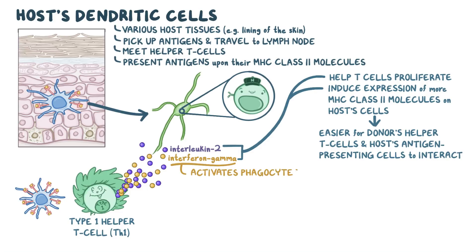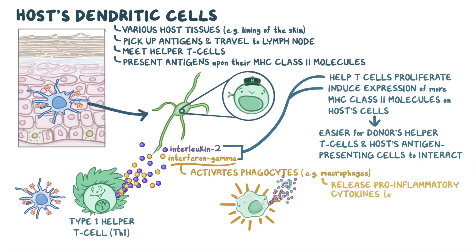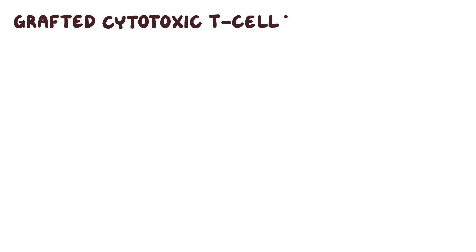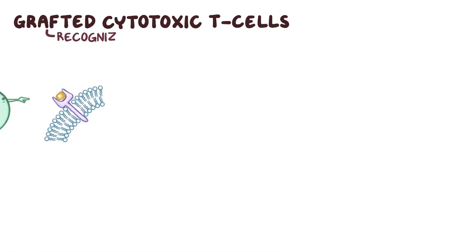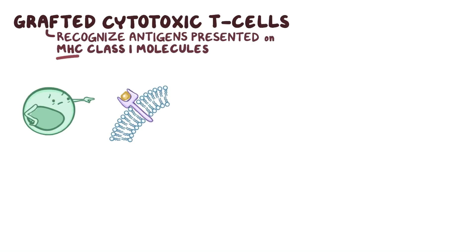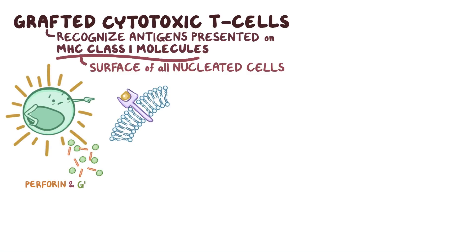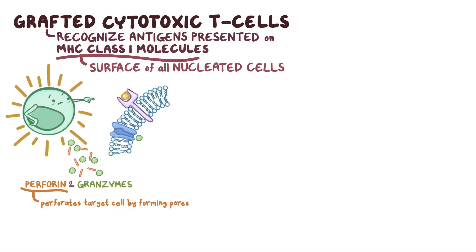Interferon gamma also activates phagocytes like macrophages, which release pro-inflammatory cytokines such as tumor necrosis factor alpha, interleukin-1, and interleukin-6, which recruit more immune cells to the area. Activated macrophages also secrete lysosomal enzymes, which directly damage tissue. In addition to helper T cells, there are also grafted cytotoxic T cells circulating in the area. These cytotoxic T cells recognize antigens presented upon MHC class I molecules, which are on the surface of all nucleated cells in the host body. If these antigens are seen as foreign, the cytotoxic T cells get activated and start secreting perforin and granzymes. Perforin perforates the target cell by forming pores, and these pores allow granzymes to enter the cell. Once inside, the granzymes induce apoptosis, or programmed cell death.